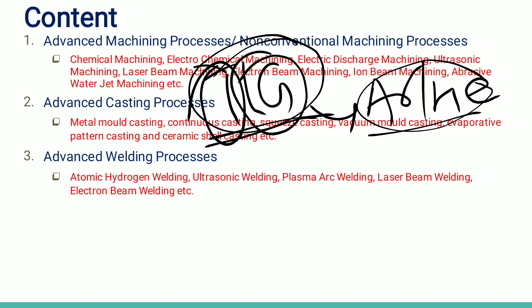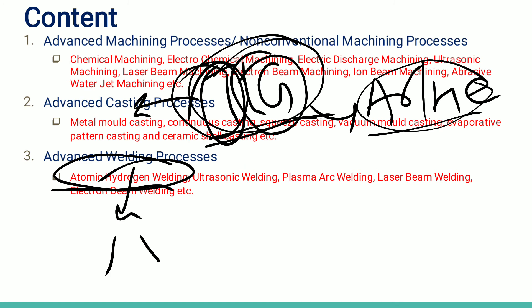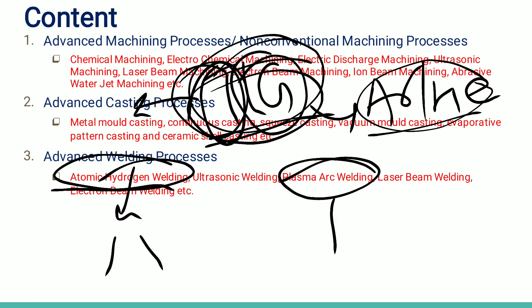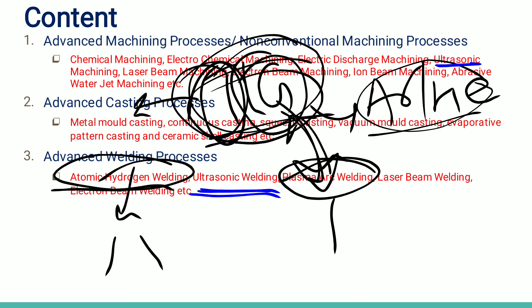In atomic hydrogen welding, two tungsten electrodes are used with different parameters. In plasma arc welding, a single electrode is used — when a very high range of power or current is applied, it is converted into plasma arc welding. For ultrasonic welding, the same ultrasonic vibrations used for machining material removal are here used for joining material.